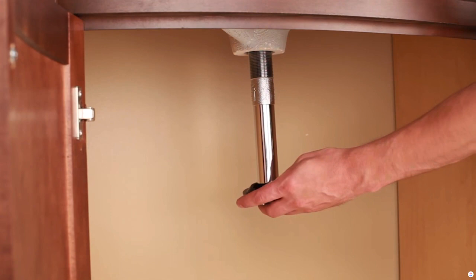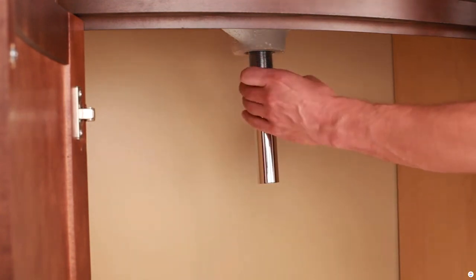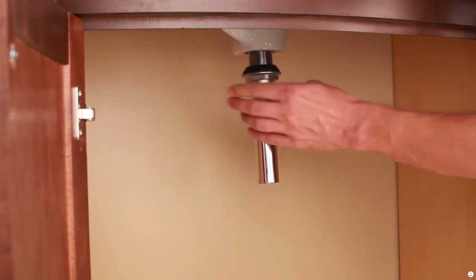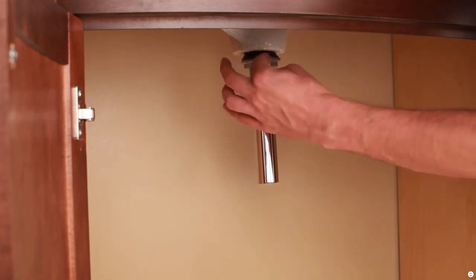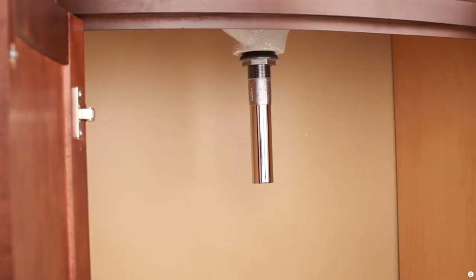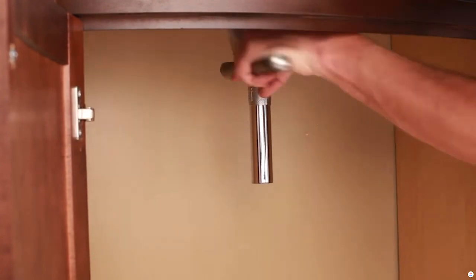Slide the rubber seal onto the tube over the threads so it contacts the bottom of the sink. Slide on the slip washer and thread on the nut. Hand tighten. Tighten with wrench. Don't over-tighten.